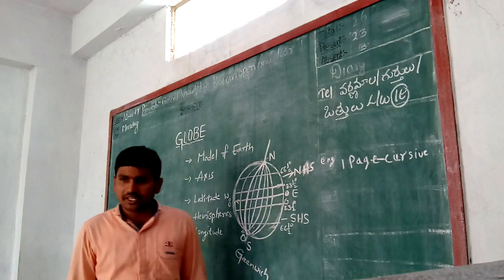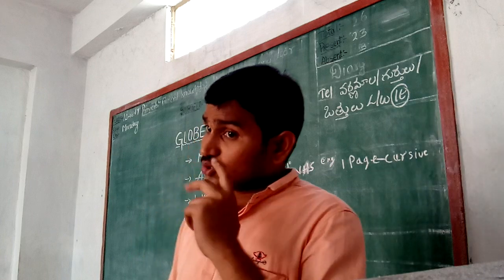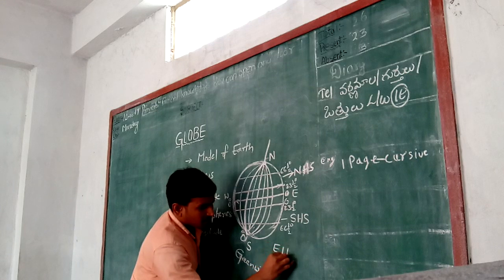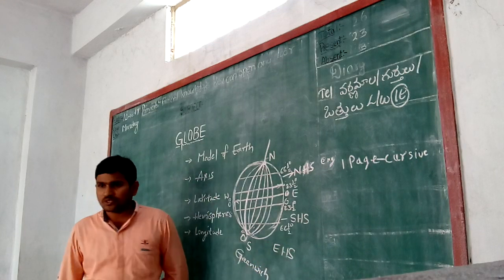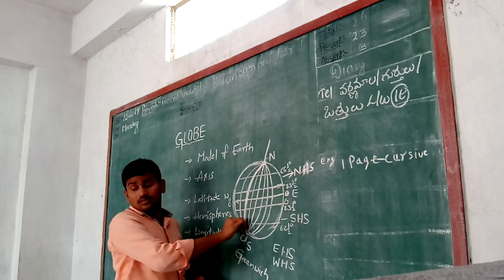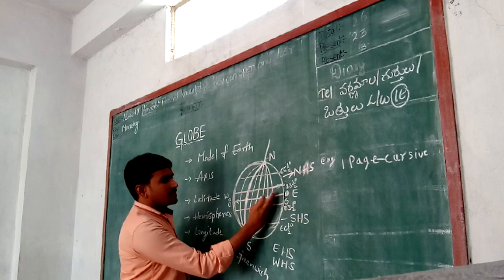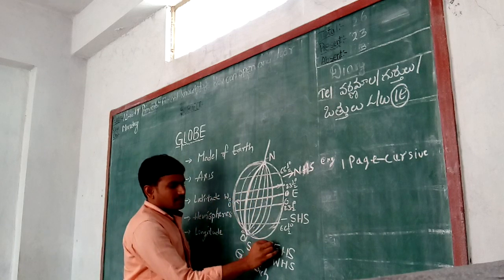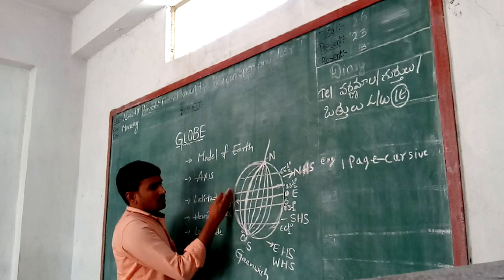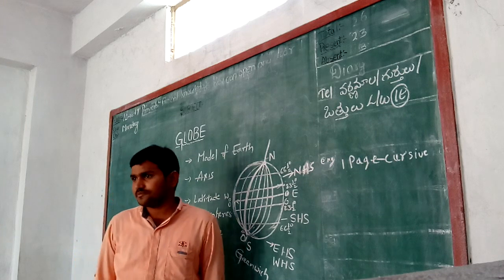The Greenwich Meridian also divides the earth into two equal halves. One is the Eastern Hemisphere and another one is the Western Hemisphere. See here — this is the Greenwich Meridian. The east part of the Greenwich Meridian is called the Eastern Hemisphere. The west part of the Greenwich Meridian is called the Western Hemisphere.